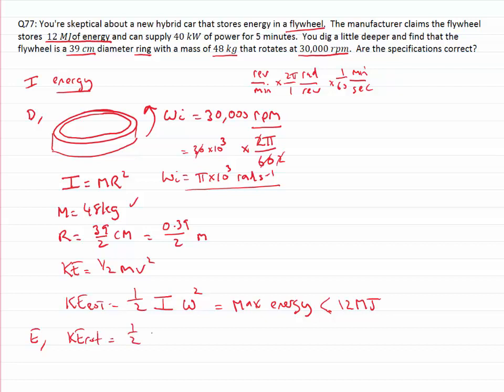So now to evaluate my rotational kinetic energy, we start off with a half times i. Remembering i is equal to mr squared, so we need the mass, which is 48 kilograms, times the radius squared, so 0.39 over 2 meters squared, that's i, multiplied by π times 10 to the 3 all squared. If we go through, put that in our calculator to work out a numerical value for the rotational kinetic energy, we end up with 9 by 10 to the 6.